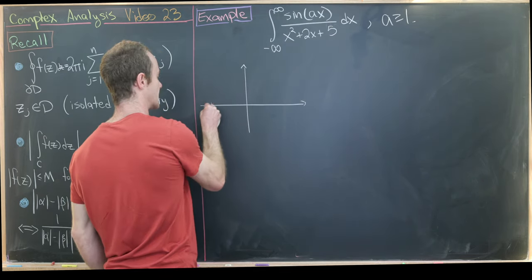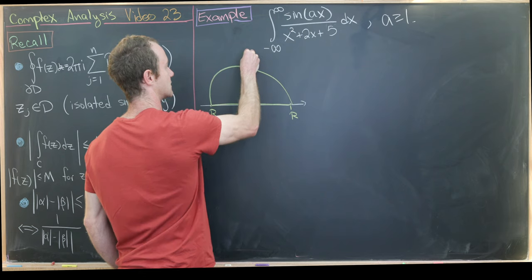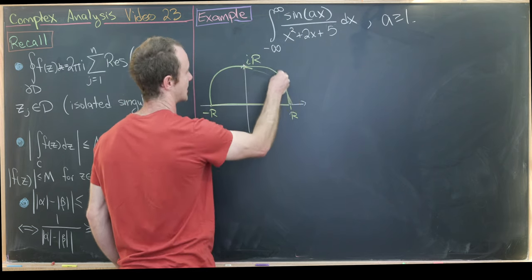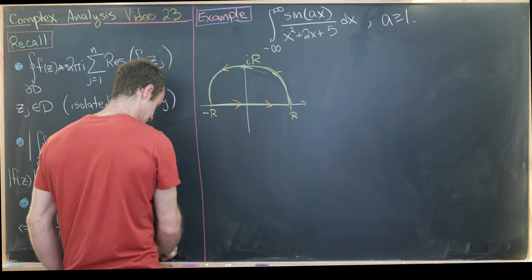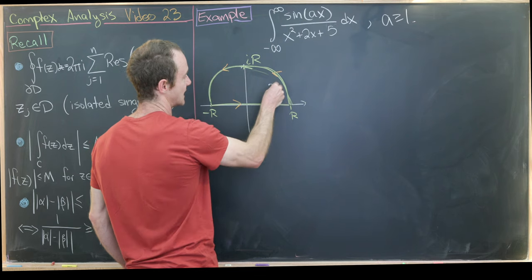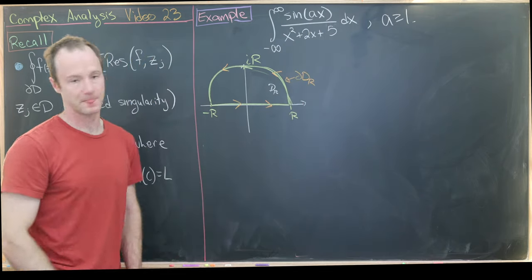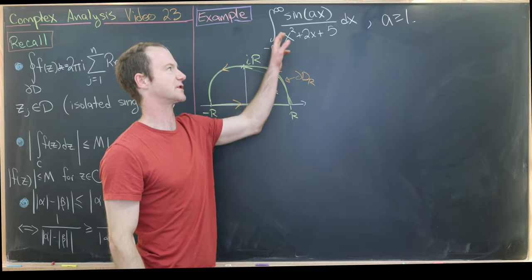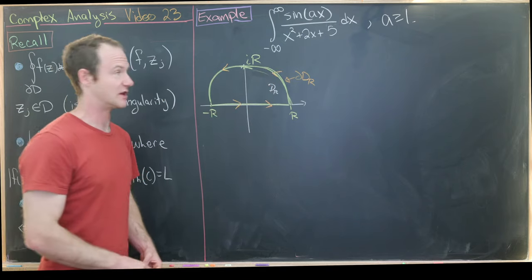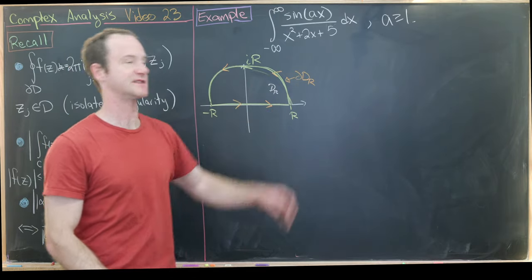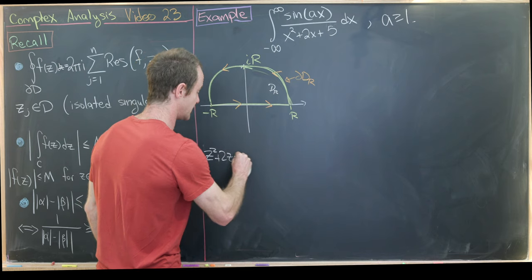We call it D_R again: it goes from −R to R along the real axis, then loops back through iR. We orient it positively. Next we find the poles by solving z² + 2z + 5 = 0. Completing the square: writing 5 as 1 + 4, we get (z + 1)² + 4 = 0, giving poles at z = −1 + 2i and z = −1 − 2i.